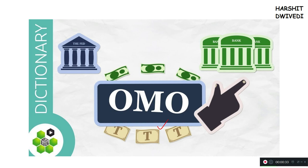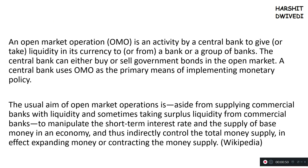Open market operations are conducted by the central bank — in the case of the USA, the central bank is the Federal Reserve, and in India it is the Reserve Bank of India — between the central bank and commercial banks. The definition, reproduced from Wikipedia, says that open market operations involve the central bank either increasing or decreasing the liquidity in the economy, meaning the flow of money and cash.